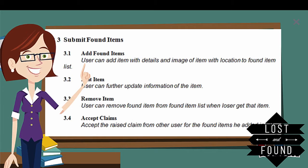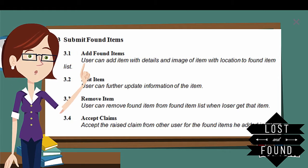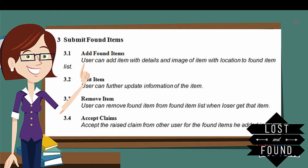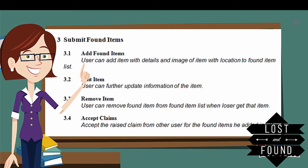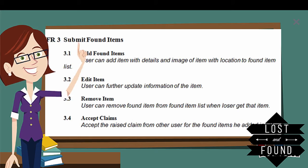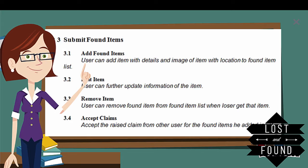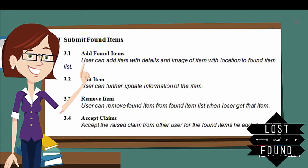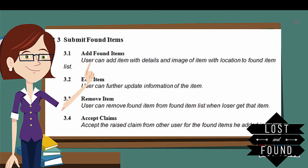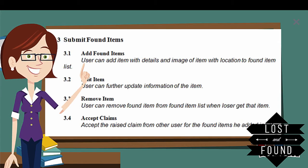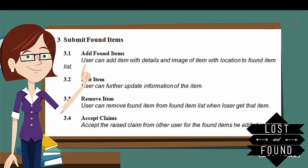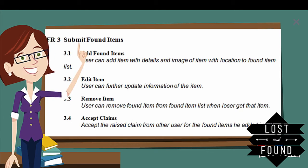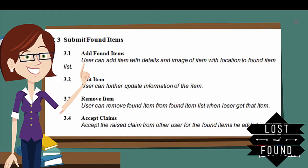Sub-requirement 3.3 is remove item — once I hand over the item to the loser, I delete or remove the item from the system. Sub-requirement 3.4 is accepting the claims — the loser checks found items and claims one. It is the finder's duty to either accept or reject the claims. Once the finder accepts a claim, the contact details of the finder will be made visible to the loser.